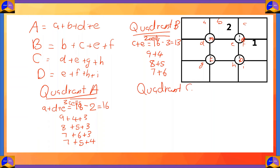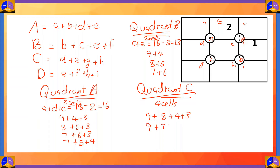Quadrant C is made up of cells d plus e plus g plus h. None of these cells is known yet, so four cells must add up to 24. The options are: 9+8+4+3 and 9+7+5+3. Now let's look at quadrant D.